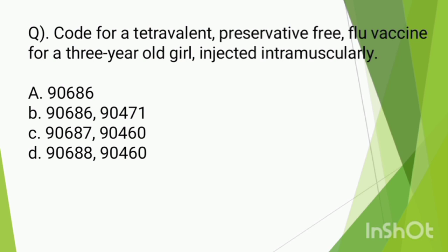We can use code 90471 for the intramuscular administration route. Using the elimination method, the preservative-free flu vaccine code is 90686. That is the correct preservative-free flu vaccine code. Combined with the administration route code 90471, the answer is B.